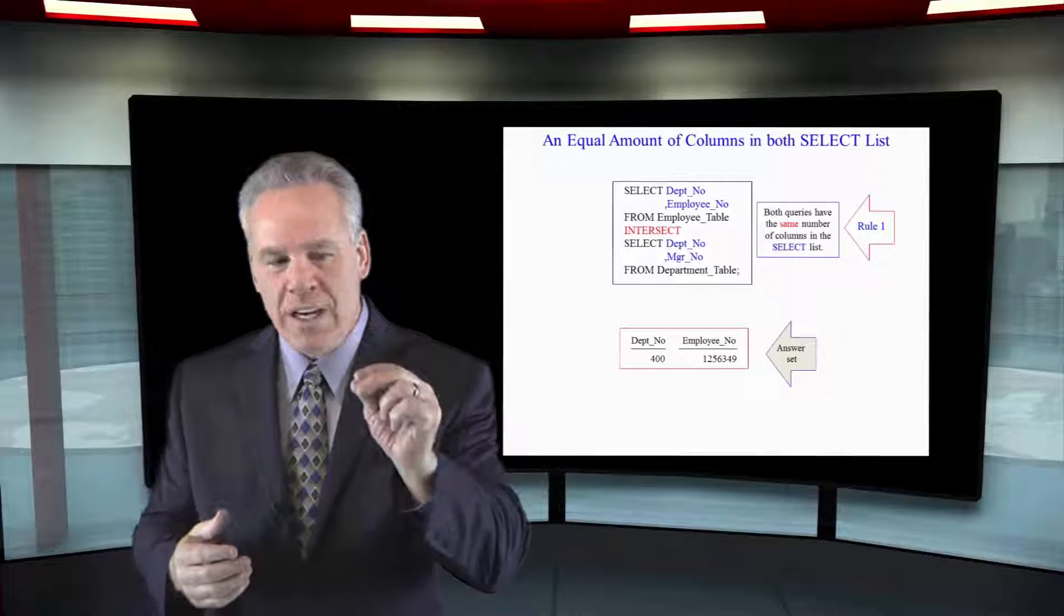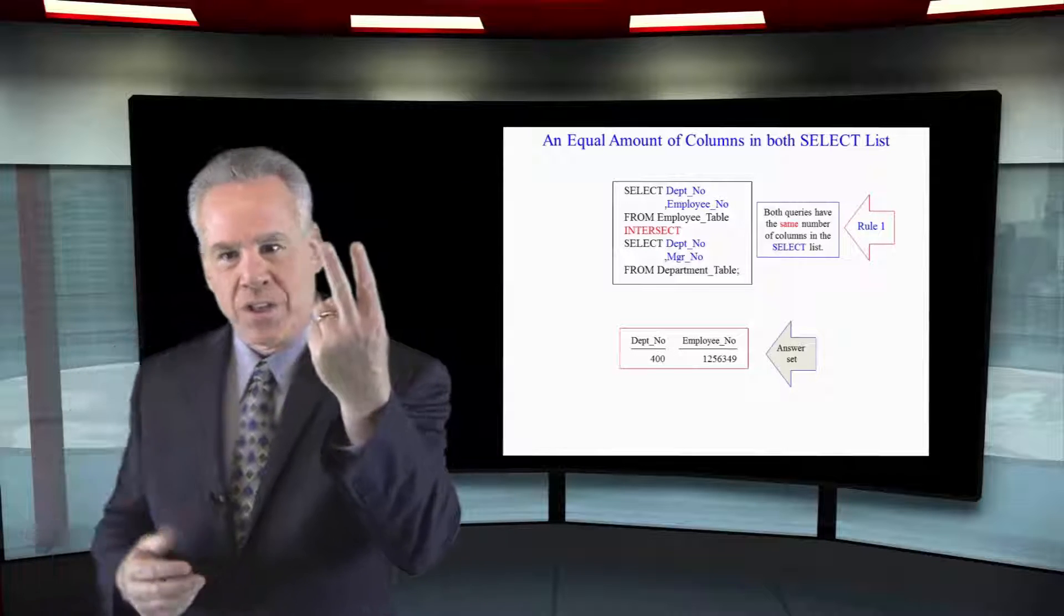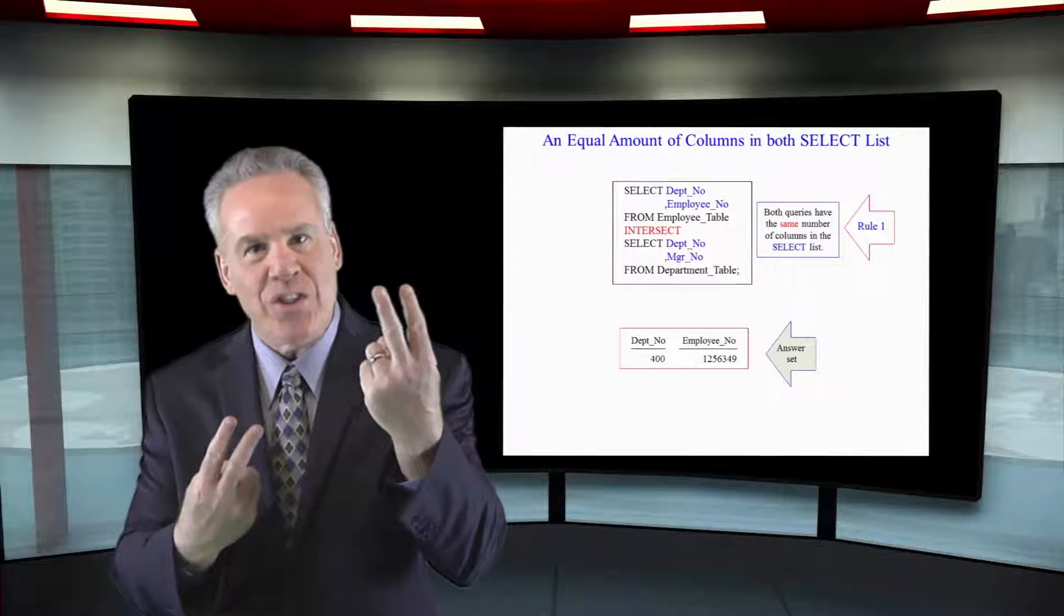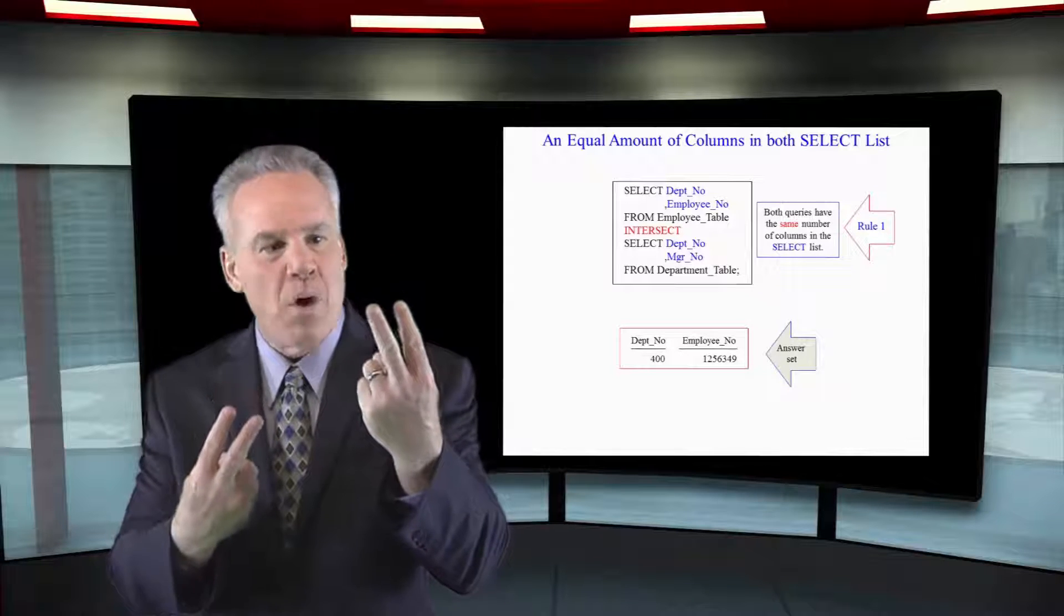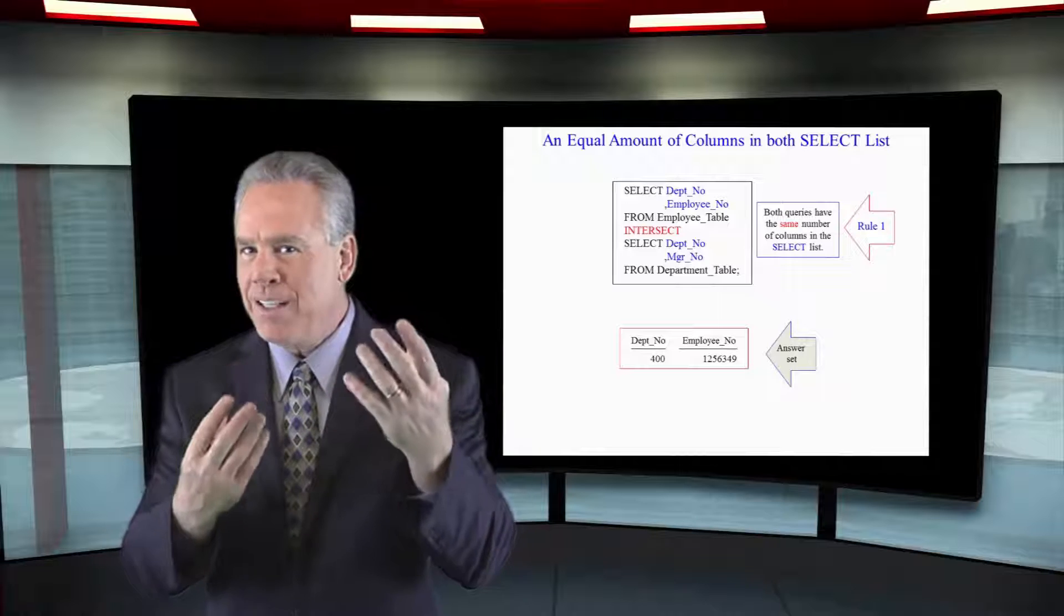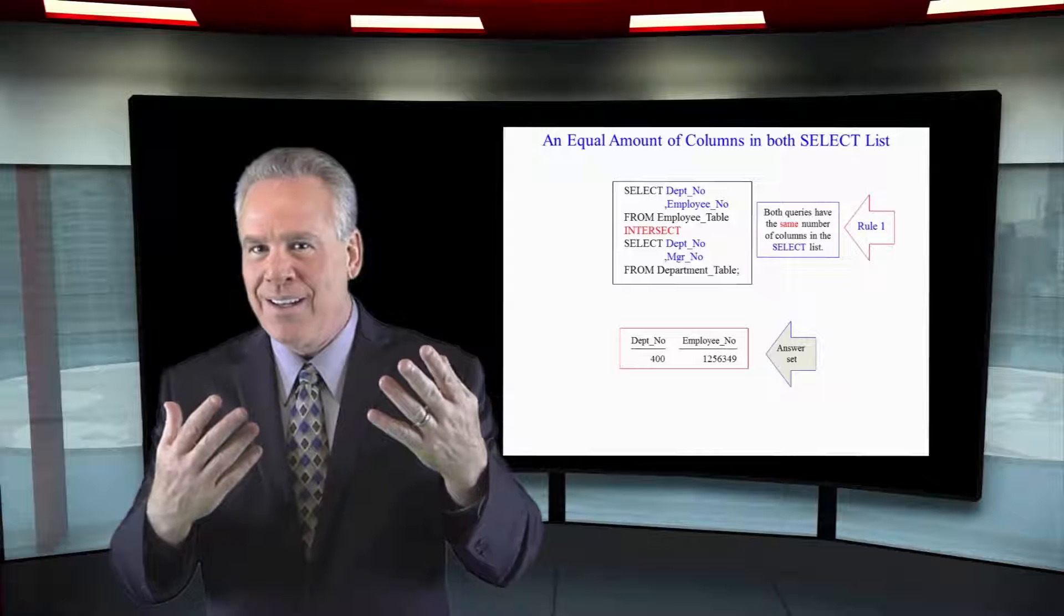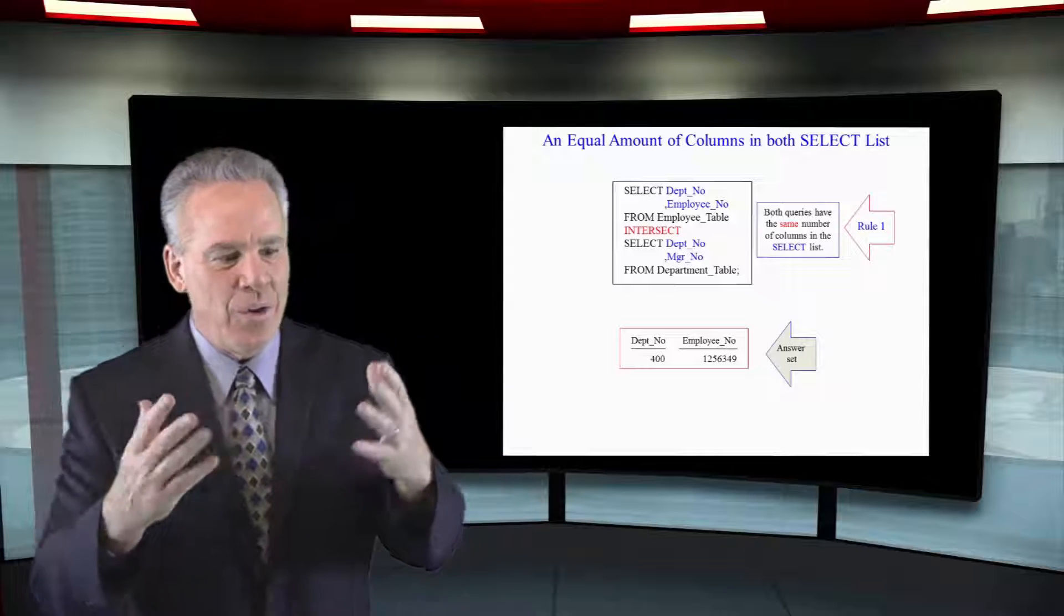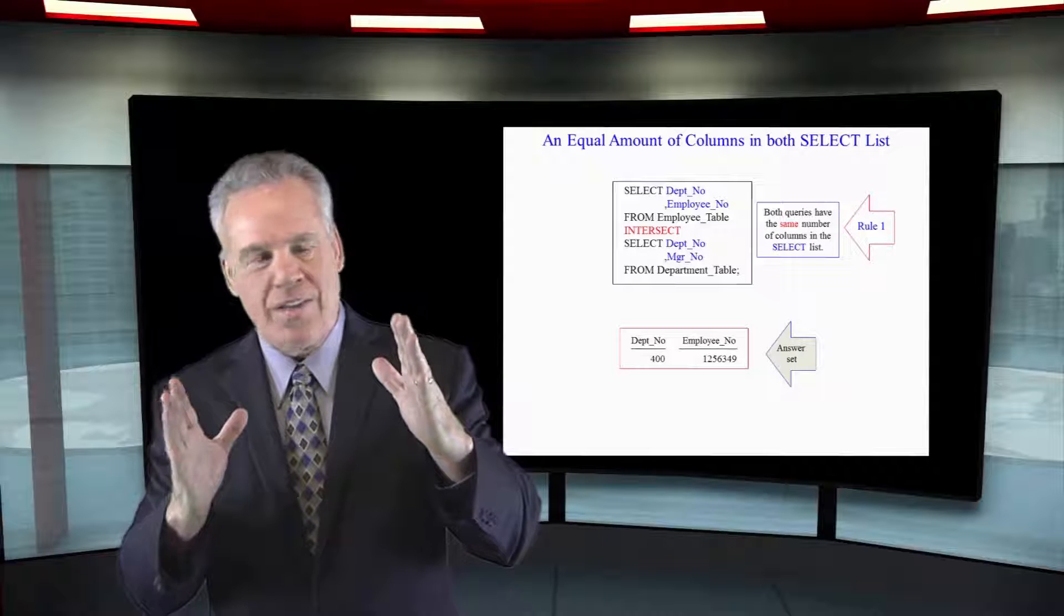We also need these two columns at the top and the bottom to be apples and apples, oranges and oranges. They have to be comparable—we call that being from the same domain. Basically the same data type, containing the same information, with a range of values that is the same.